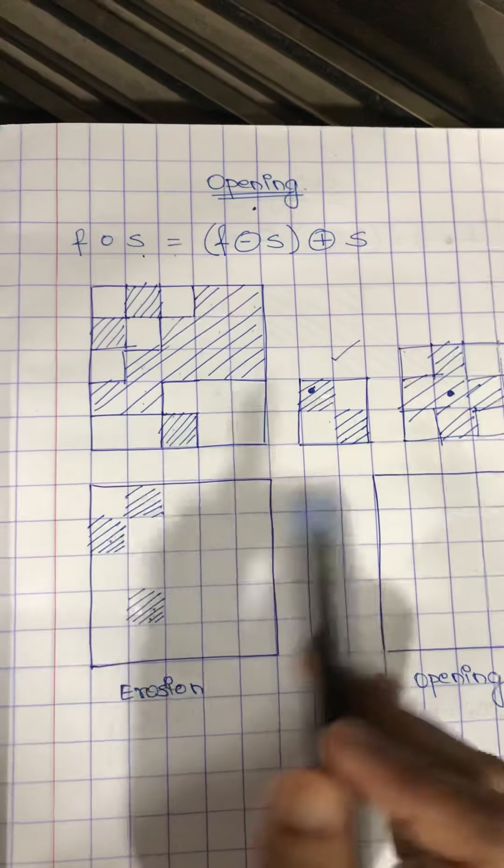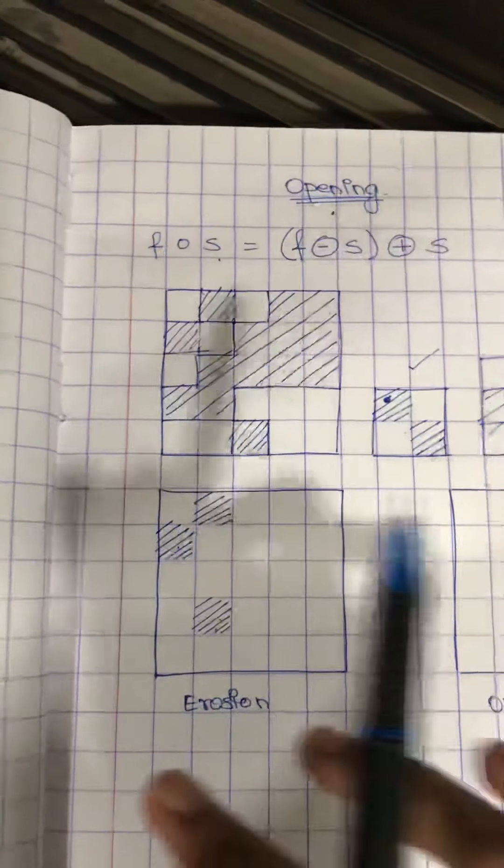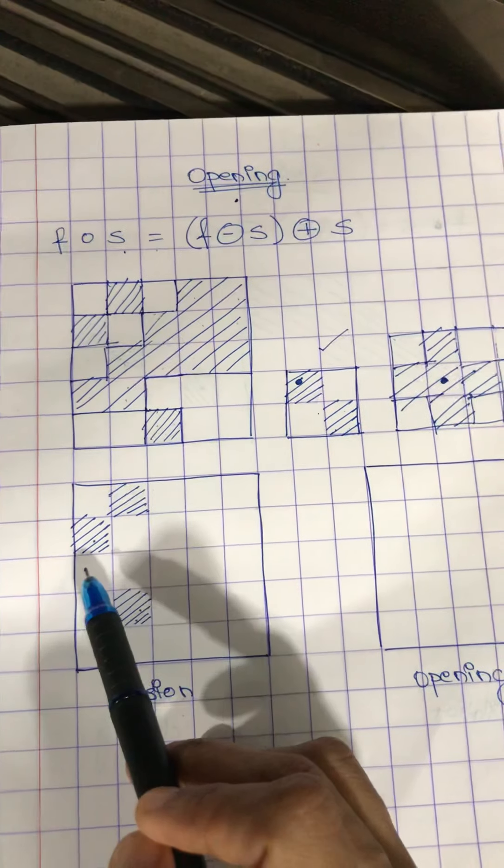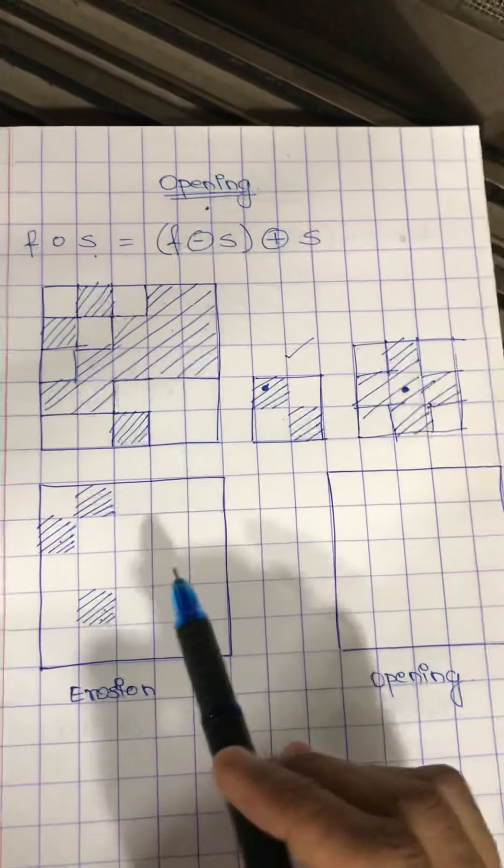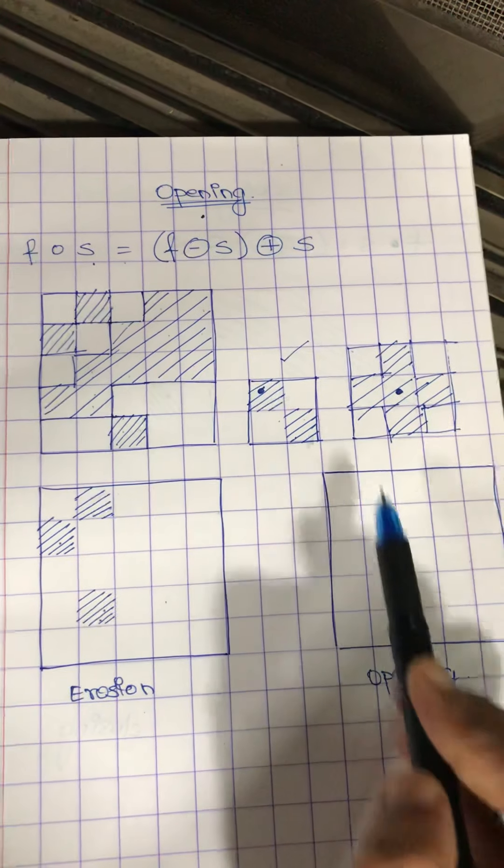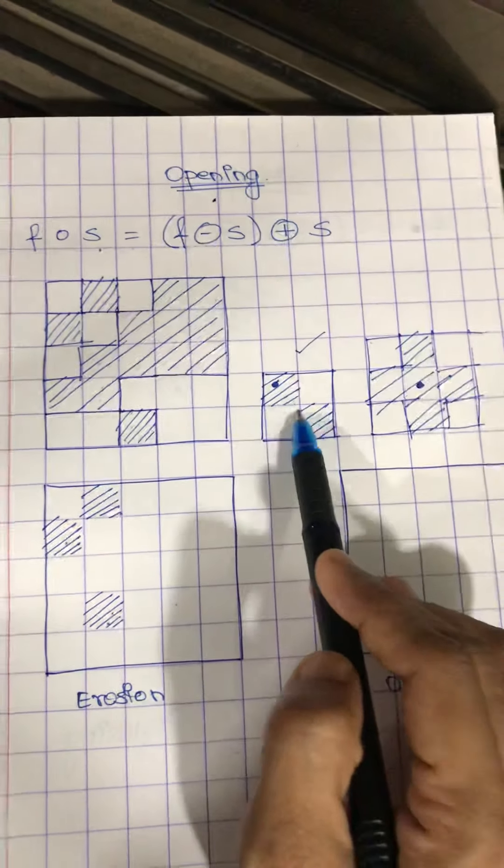So only these three pixels will remain a part of the foreground. Now next, we have to for opening, output of erosion has to be followed by dilation by the same structuring element.